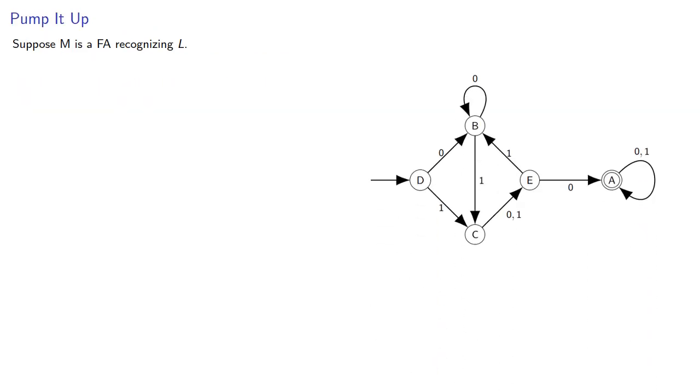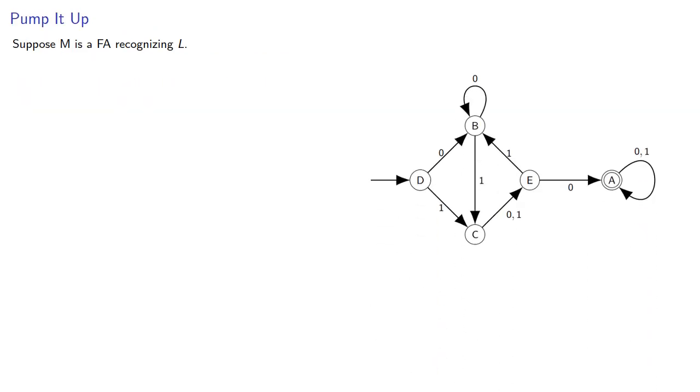Suppose we have a finite automaton recognizing our language. Since it is, well, finite, it has a finite number of states. So suppose it has n states.